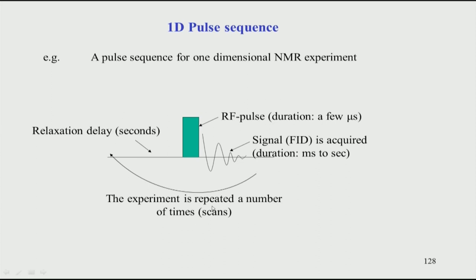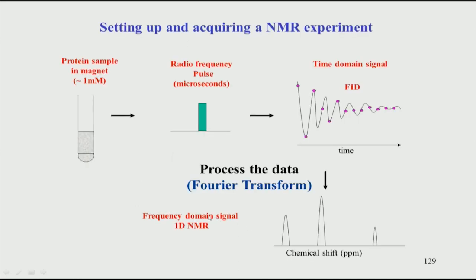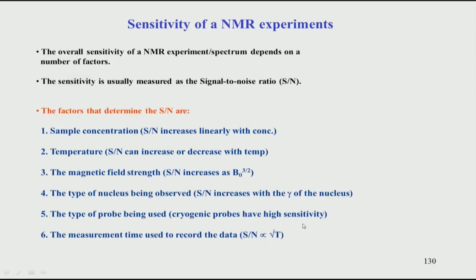How many scans were used is a practical question that depends on sample sensitivity. If your sample is highly concentrated you do not need very many scans. If the sample is very dilute, or if you have a very small amount and cannot make a concentrated sample, you have to use more scans to increase the signal-to-noise ratio. Signal-to-noise, concentration, and scans are directly related, and it is important to understand the factors which determine NMR sensitivity.